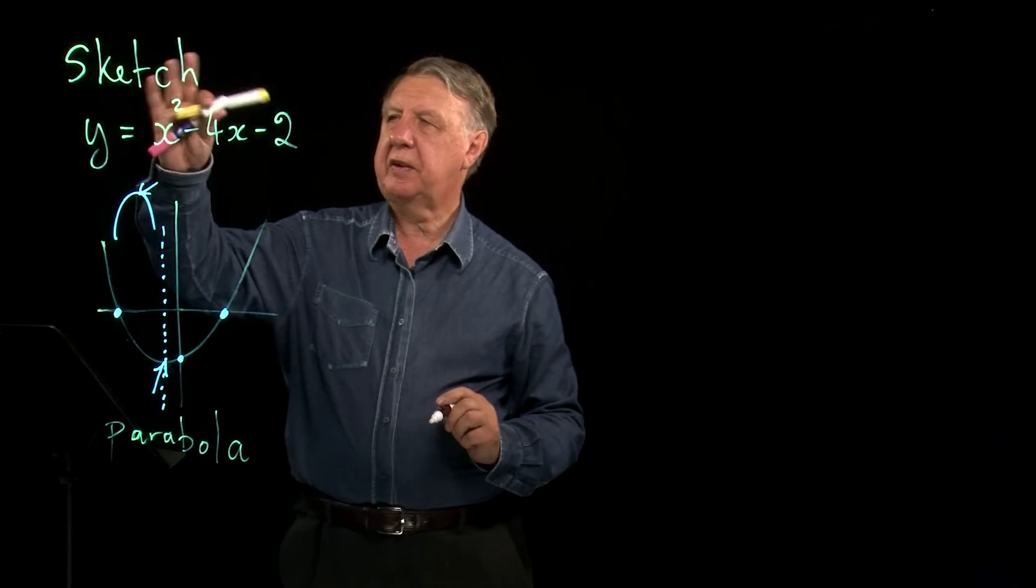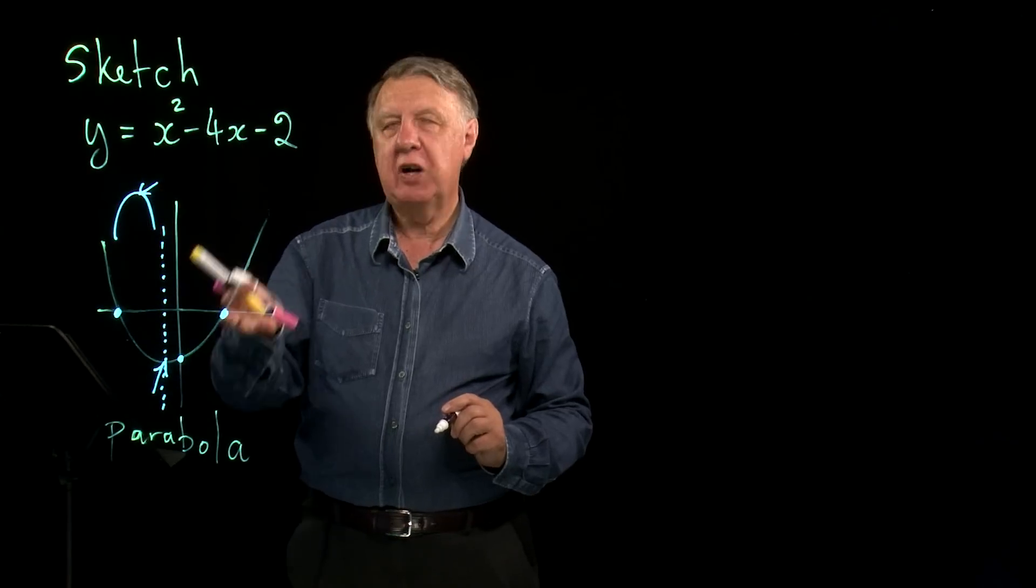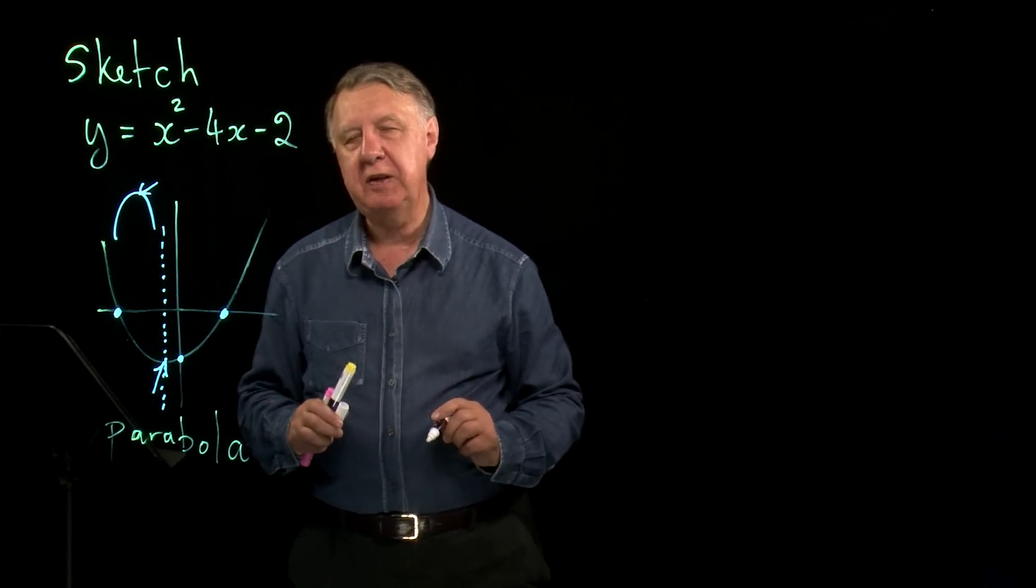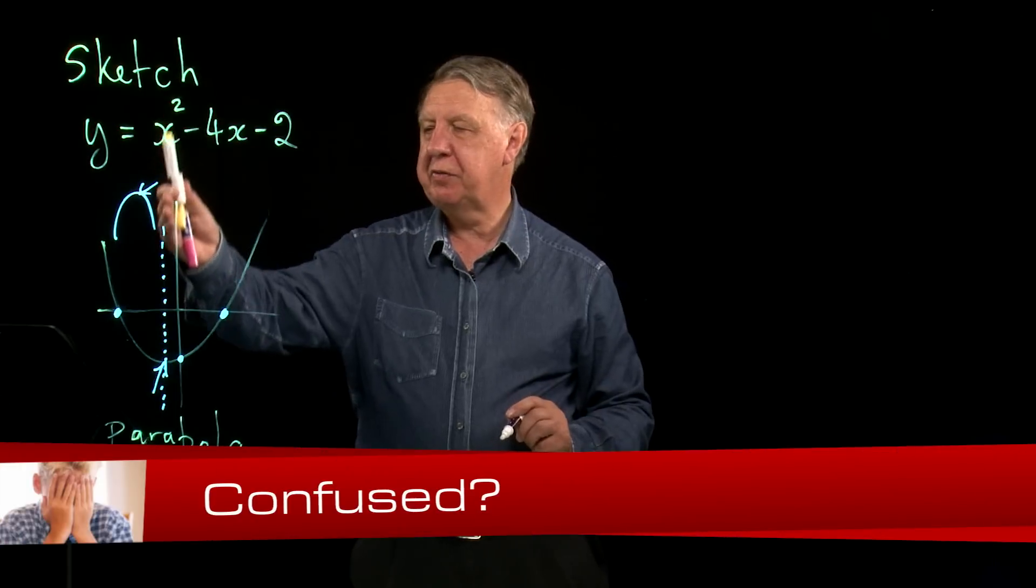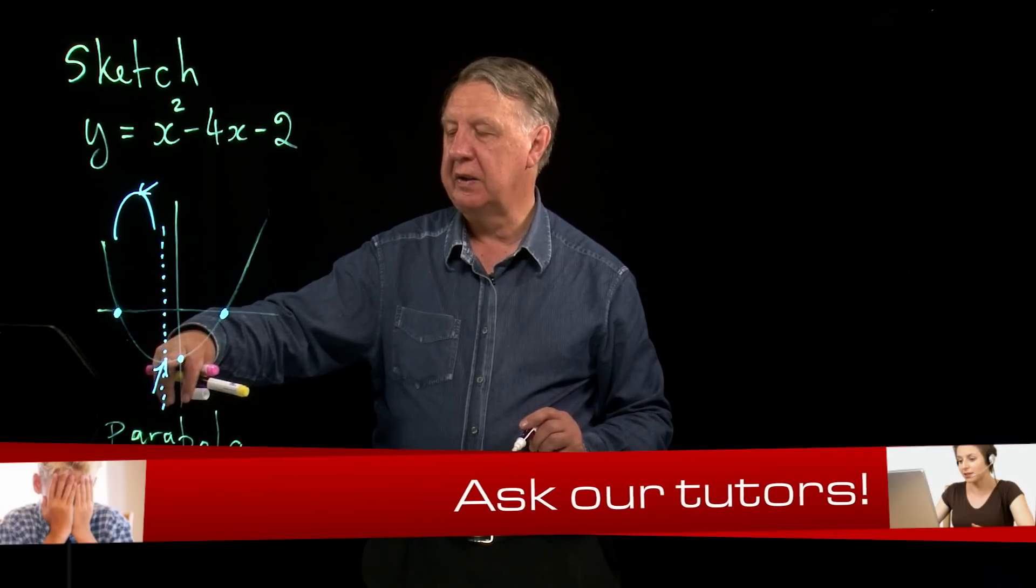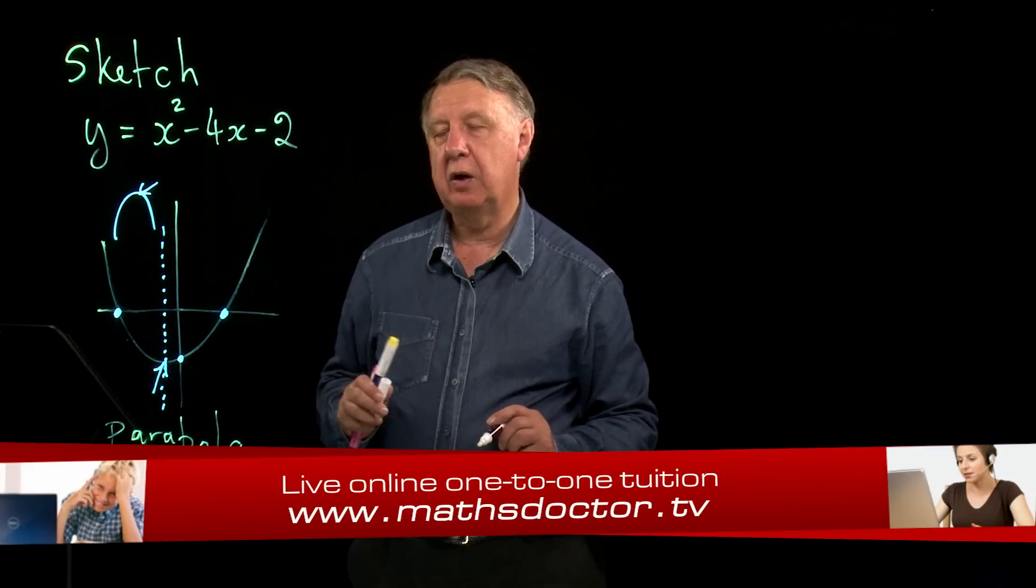And another commonly required thing is the line of symmetry. So sketch then will try and think of it like this. So we want the points of intersection with the axes. We'd love to know where the middle is the symmetry line and we'd like to know the lowest or the highest point.